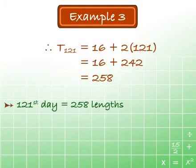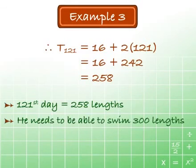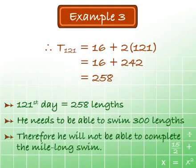Therefore, on the 121st day, the swimmer will swim only 258 lengths of this pool. Because he needs to be able to swim at least 300 lengths to complete the mid-mile mile, he will not be able to complete the mile-long swim.